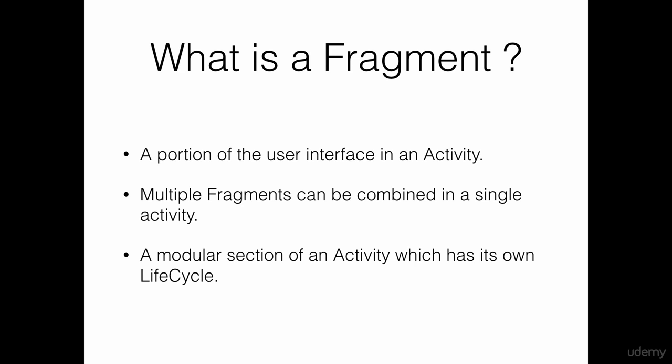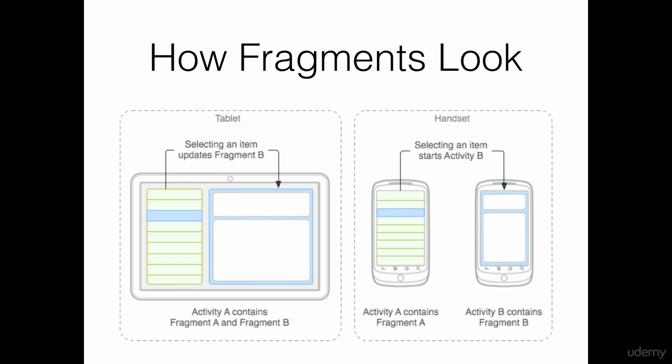If you have trouble understanding what fragments actually are and how they work, let's take a look at a simple example. This is the basic overview of how fragments actually look. There are two examples here: one is the case of a tablet and on the right-hand side we have an example of a handset. On the handset we have a list view with activity A containing fragment A, and when you click on a particular option we have activity B containing fragment B.